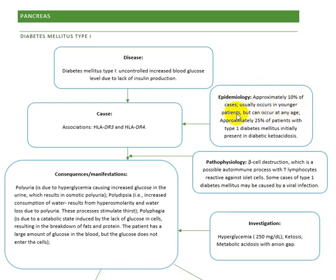The epidemiology: approximately 10% of diabetes cases are Type 1, usually occurring in young patients. At first, this disease was thought to occur mostly in young age, which is why it was initially called juvenile diabetes mellitus, but that name has since changed.